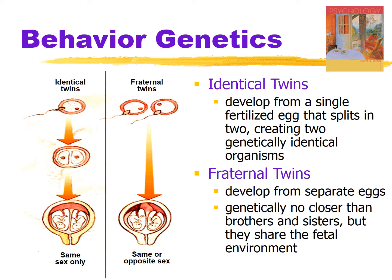Behavior geneticists like to consider identical twins — nature's clones. Even though they are biologically identical, identical twins can be quite distinct psychologically due to non-genetic influences. For example, one twin in a slightly different position in utero may have different environmental influences on their development — such as being able to hear the mother singing a little bit better — and will therefore develop slightly differently from their co-twin.